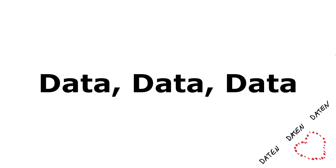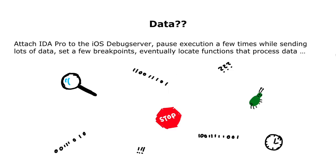When iOS interacts with hardware, it exchanges data, and this is what we want to locate, intercept and manipulate. When I started reverse engineering wireless daemons, I just attached IDA Pro to the iOS debug server, made a lot of traffic, paused the daemon a few times and checked if I could figure out which data was processed where just by staring at it. Overall this works, but it is very time consuming and no fast generic approach.